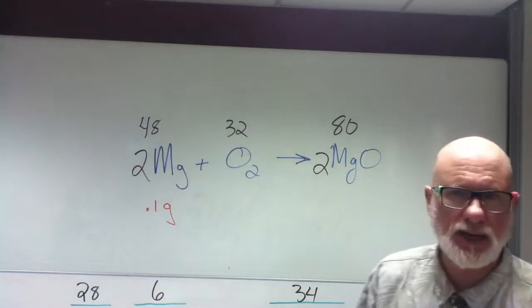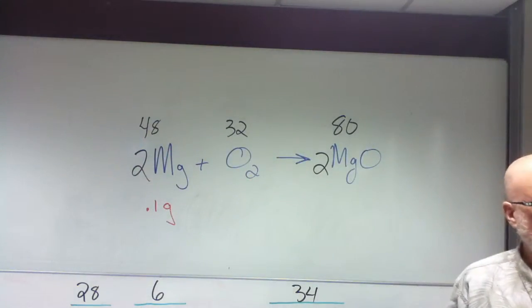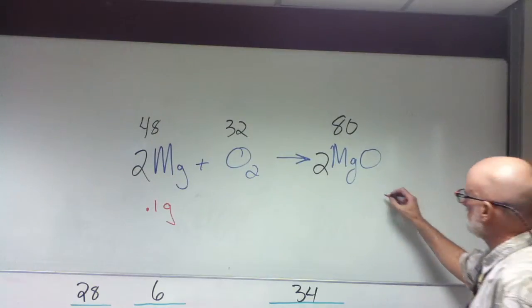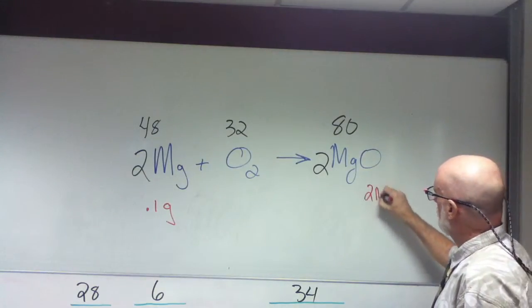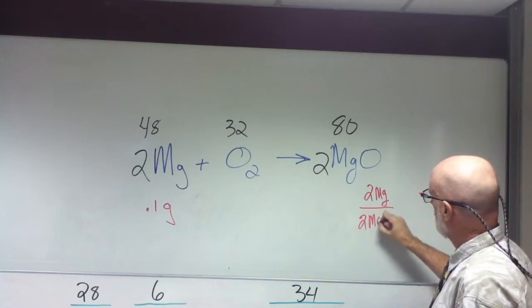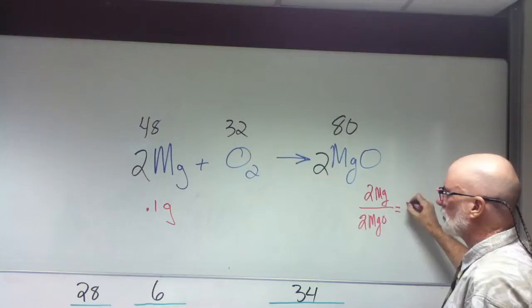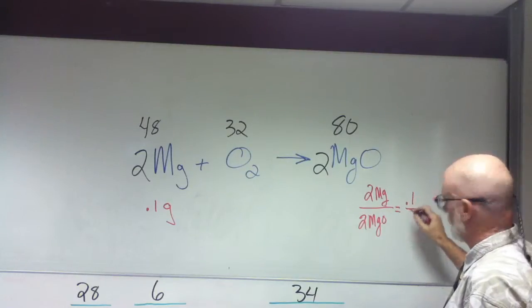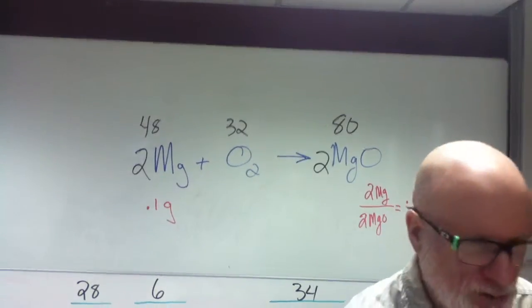Now, let's do a calculation on how much you should have gotten before we find out how much you got, okay? All right, now, so it's going to be 2Mg over 2MgO equals 0.1 over, no, sorry, my apologies, equals what?